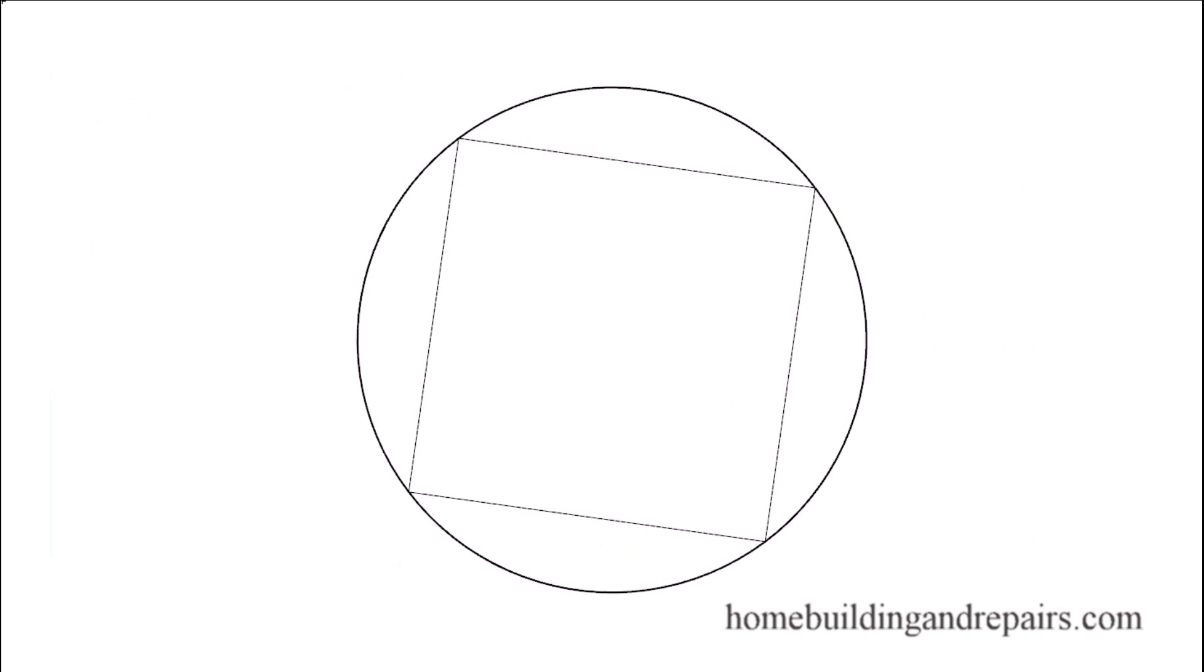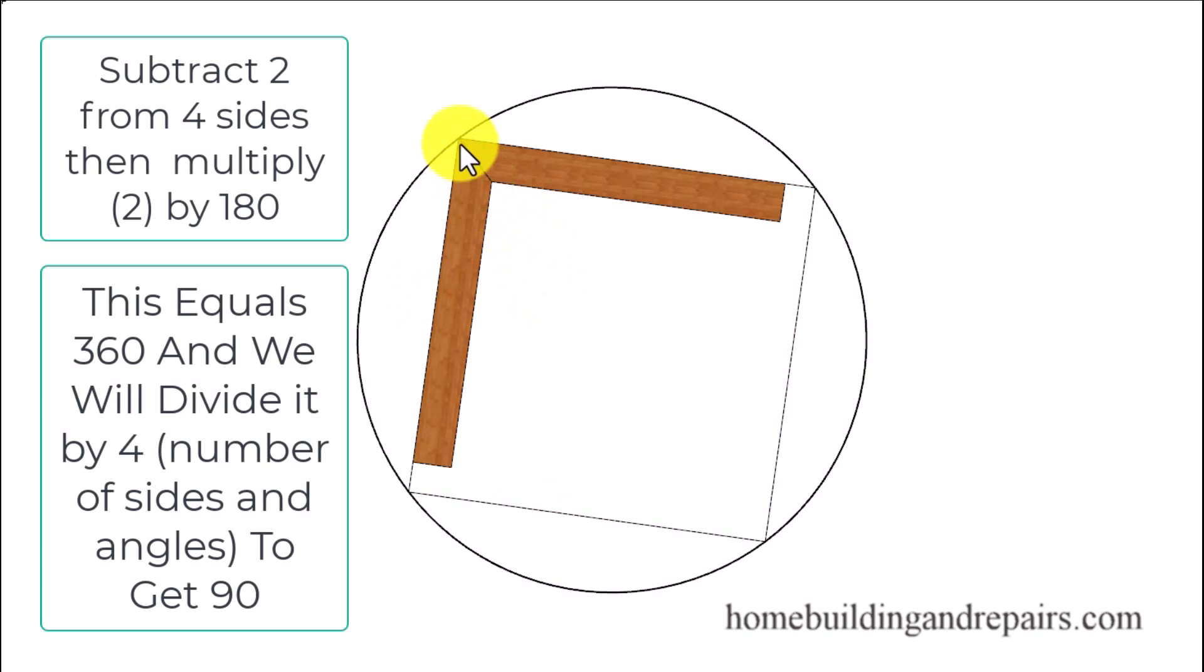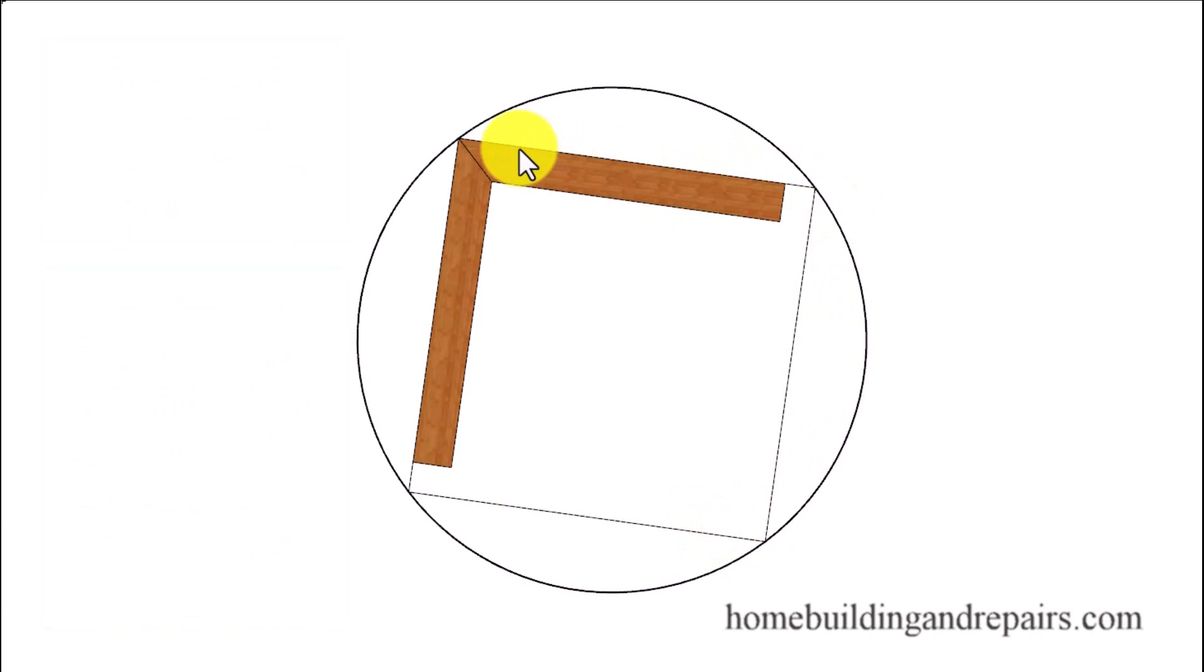For those of you who are more familiar with a square and square corners when working in construction, we can use the same math formula. When we do find the angle for a square, for example, it is a 90 degree angle at each one of the corners.